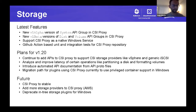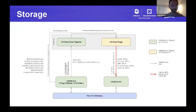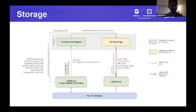Beyond 1.20, we want to take CSI Proxy to a stable state, add more storage plugins such as the AWS EBS plugin, and look toward deprecating the in-tree storage plugins that target Windows today. The architecture diagram on the next slide shows how CSI Proxy enables a CSI node plugin in Windows to communicate with kubelet, the CSI node driver registrar, and the host OS for privileged operations. Questions can be directed to the CSI Windows channel in Slack.